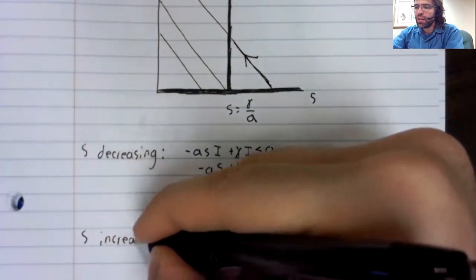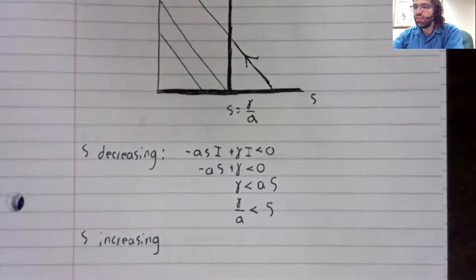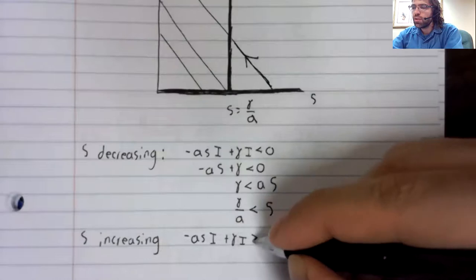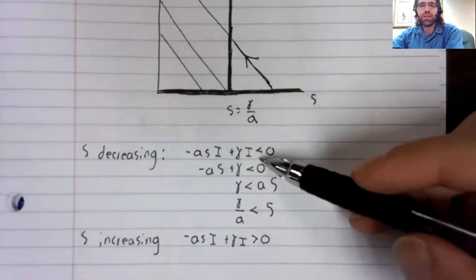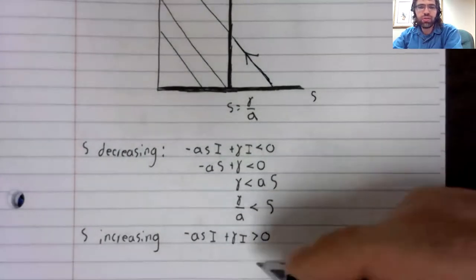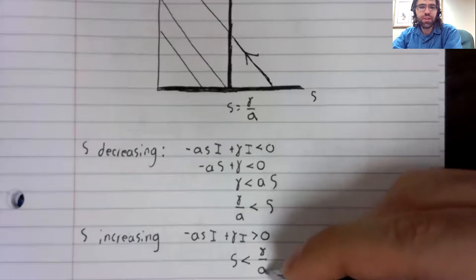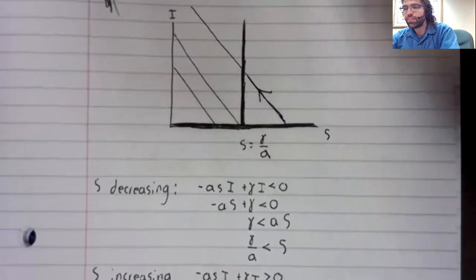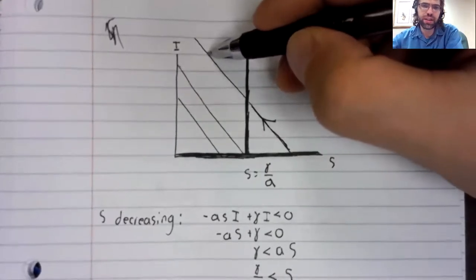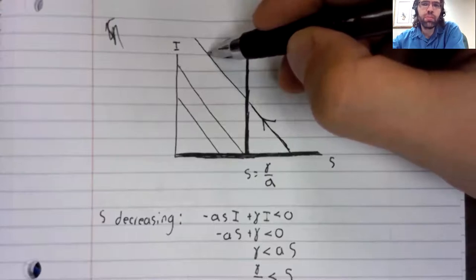Conversely, when is the number of susceptible people increasing? Well, this time, you want to know when it's increasing with time, so you make the time derivative positive, and you get the reverse of this. You find that it's increasing when S is less than gamma over A. So if S starts to the left of this line, if S starts here, for example, then as time passes, S increases, we move from the left to the right.